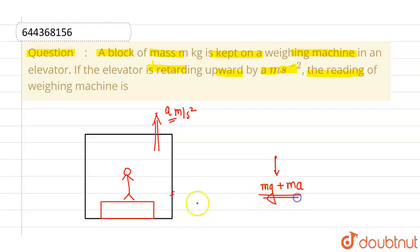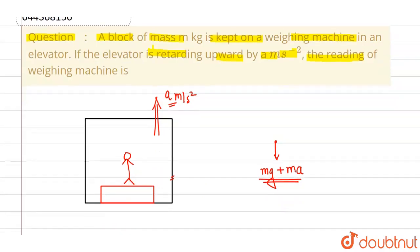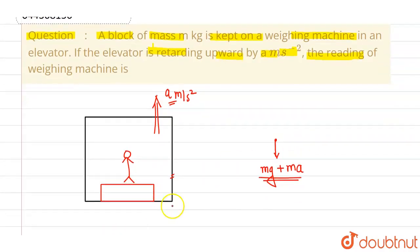So this total weight will be exerted on this weighing machine and this weighing machine will measure this value. So this value is nothing but m into g plus a. This is the reading of weighing machine.